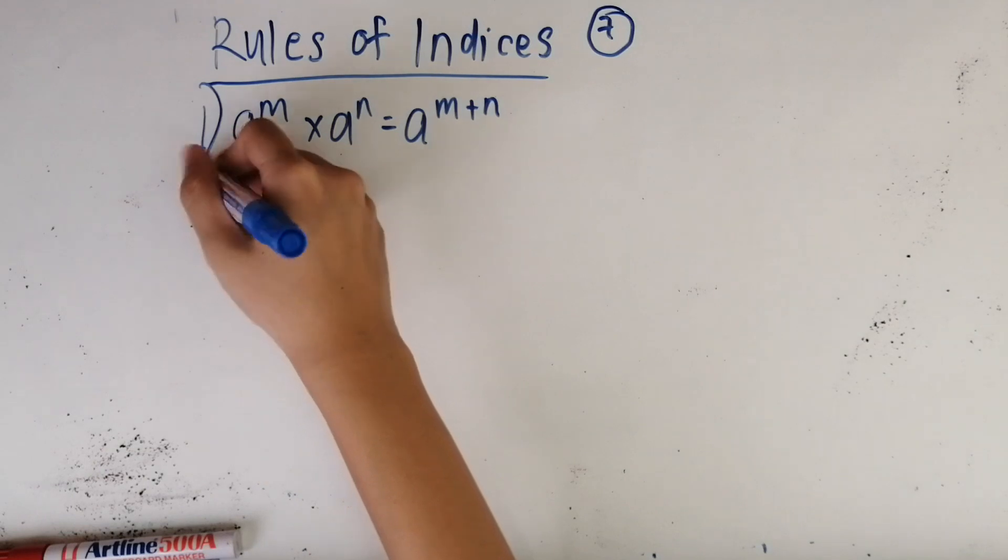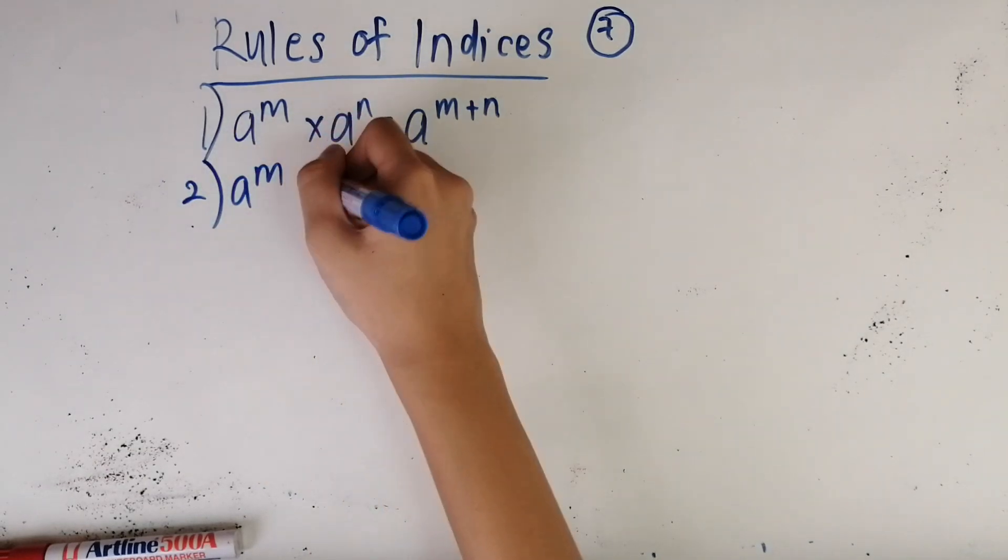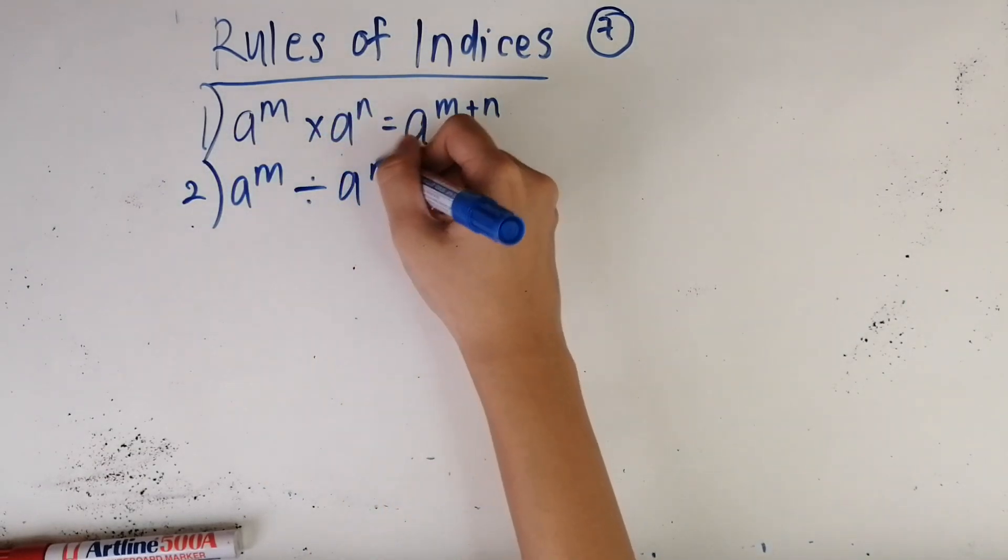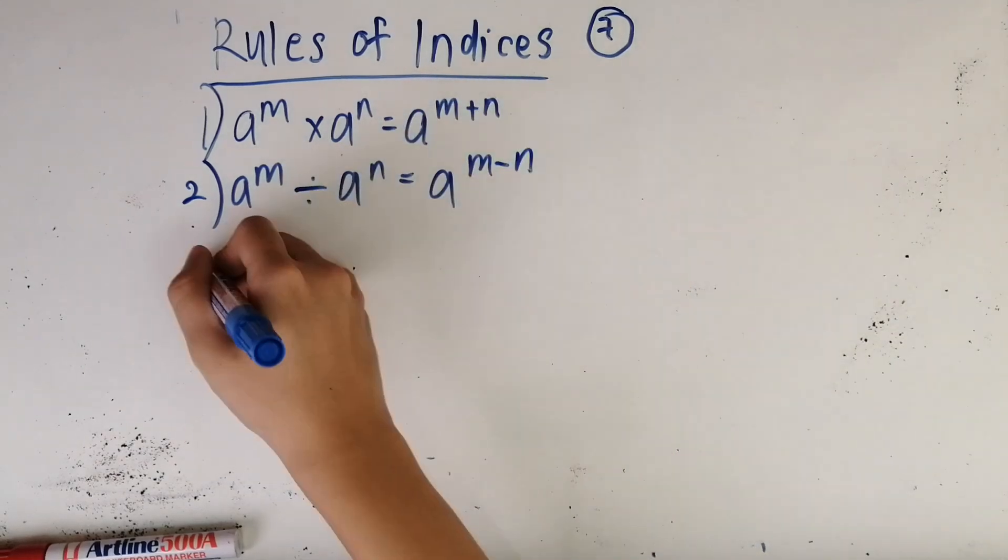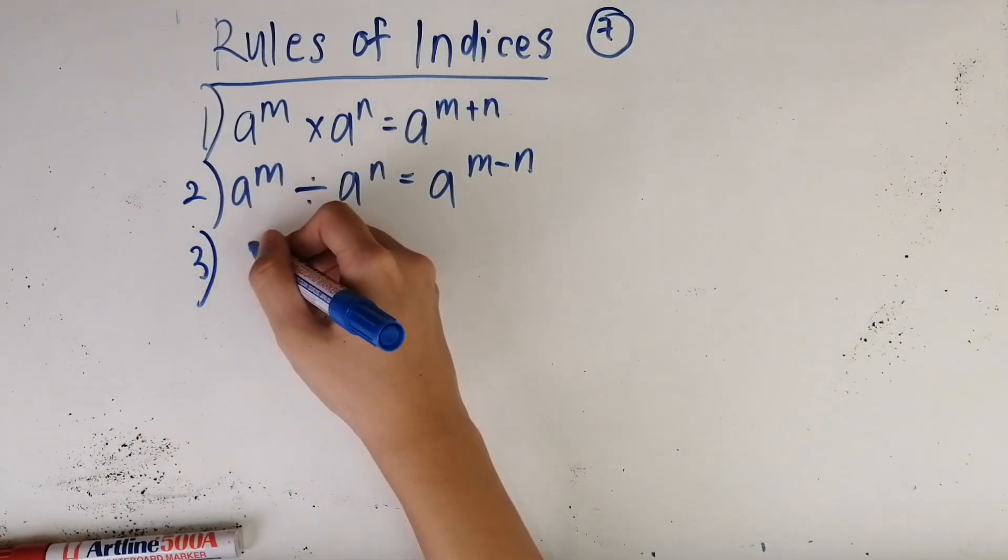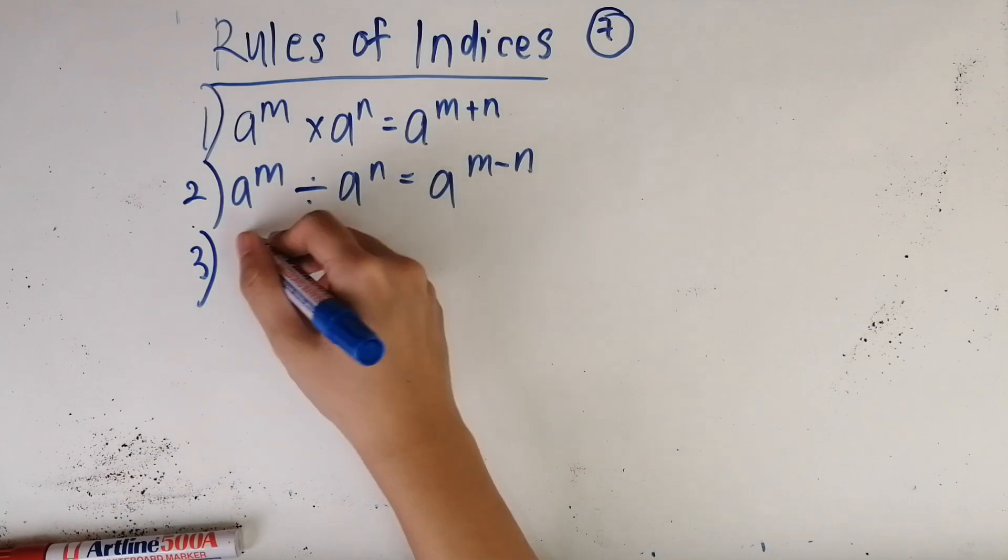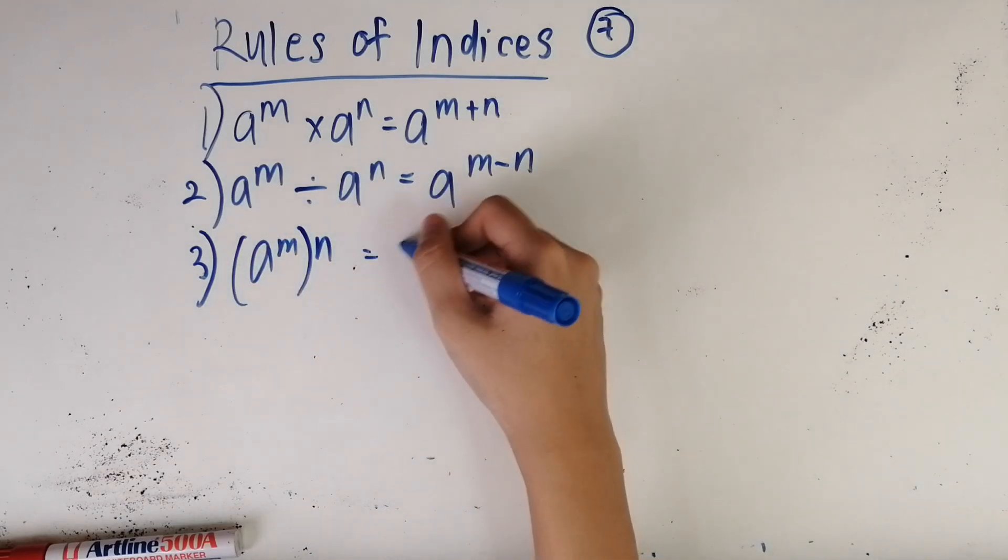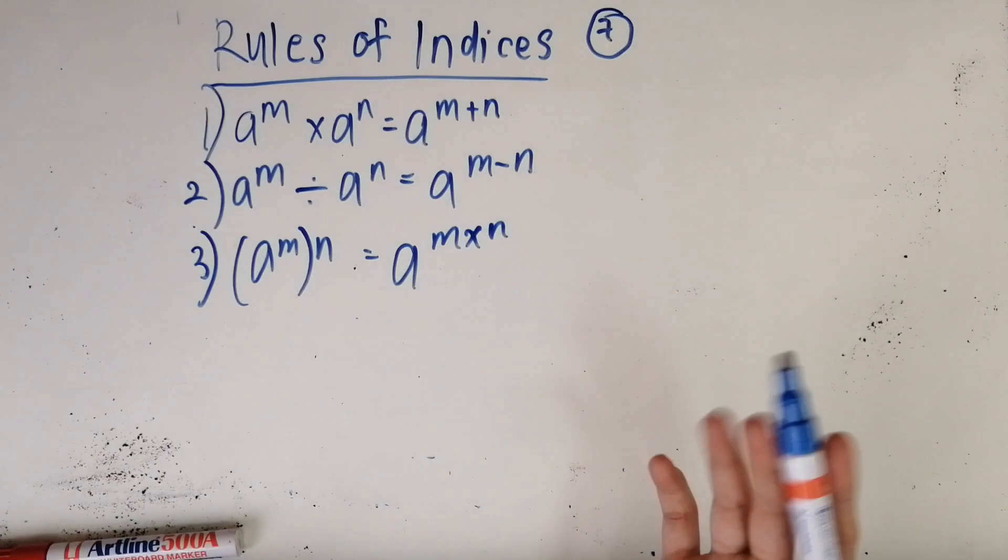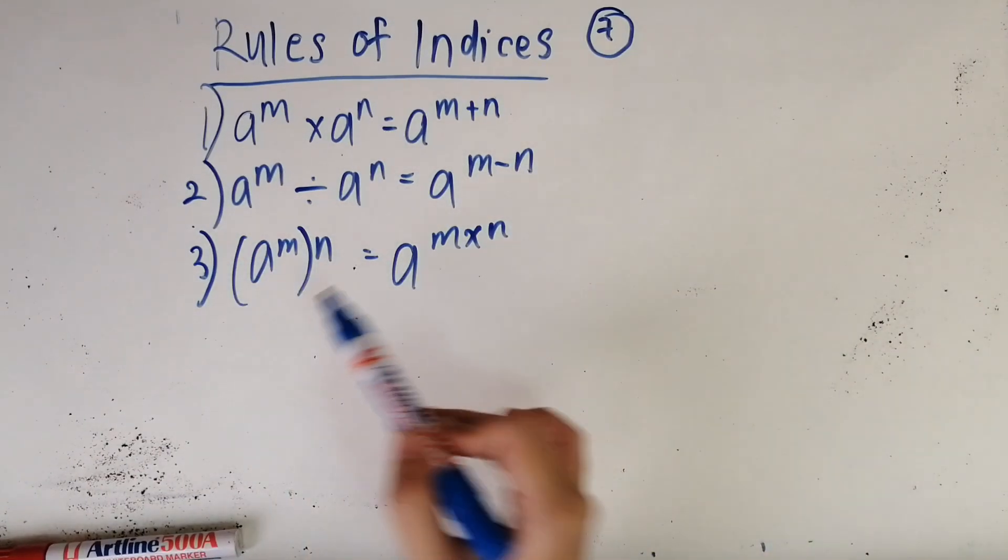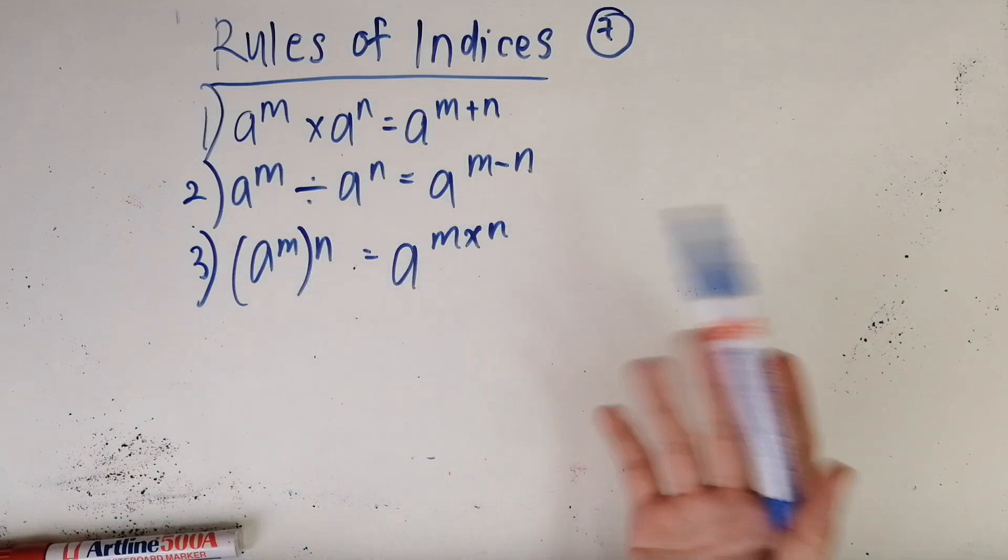The second rule: a^m divided by a^n equals a^(m-n). The third rule is (a^m)^n equals a^(m×n). As I'm sure you know, the bracket means multiply, so naturally this is like an unwritten rule basically.